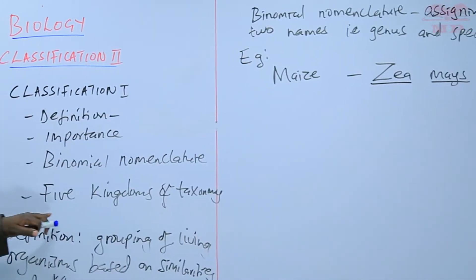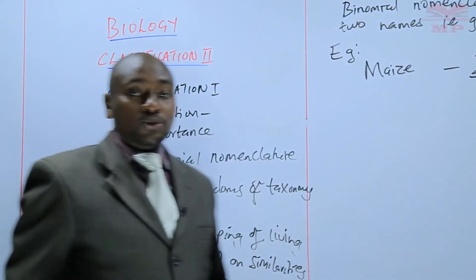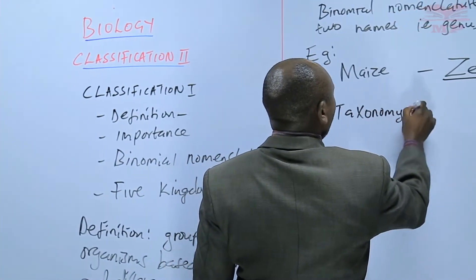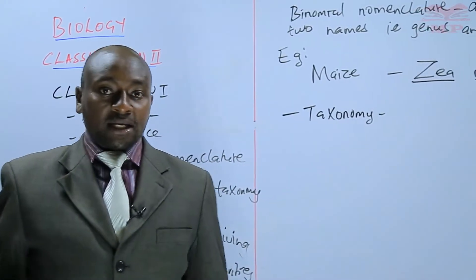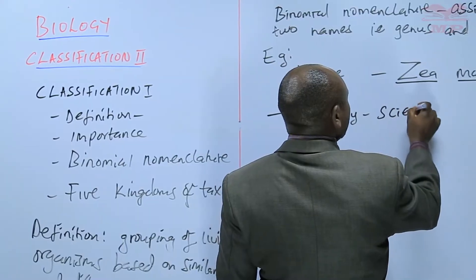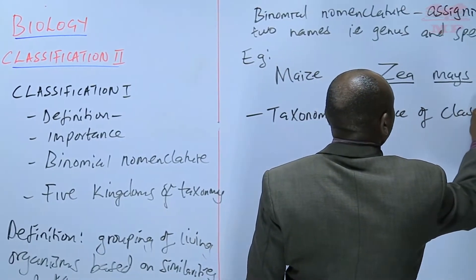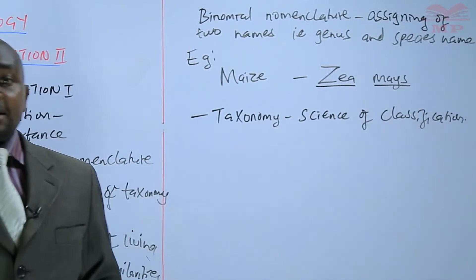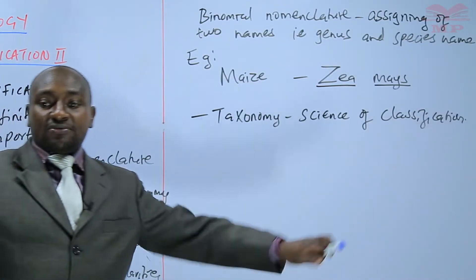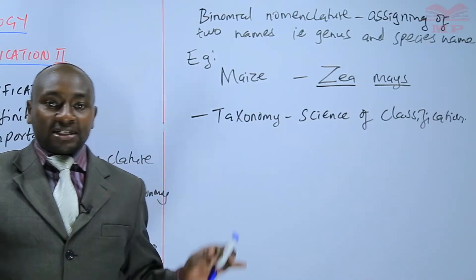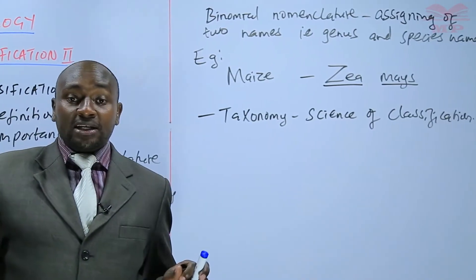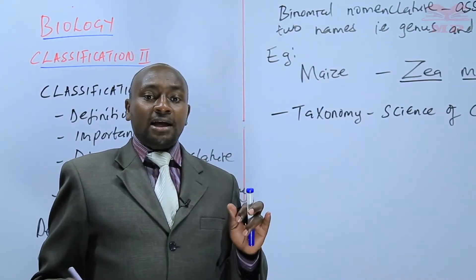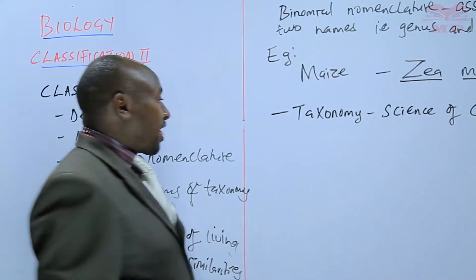We shall also review the five kingdoms of taxonomy. But before we look at the five kingdoms, it is important to define what taxonomy is. Taxonomy is the science of classification. Classification may not necessarily be scientific — we can classify objects and so on — but the science behind classification is referred to as taxonomy. In taxonomy, we divide organisms into what we call the kingdoms.